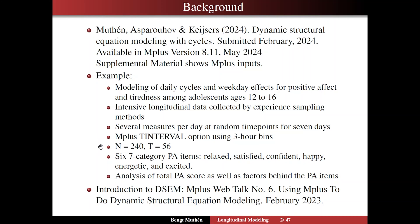We have 240 adolescents and we end up with 56 time points. We are going to look at six seven-category positive affect items: relaxed, satisfied, confident, happy, energetic, and excited. We will do an analysis of both the total PA score as well as analyzing the factors behind the PA items.